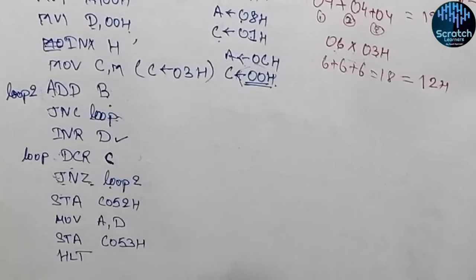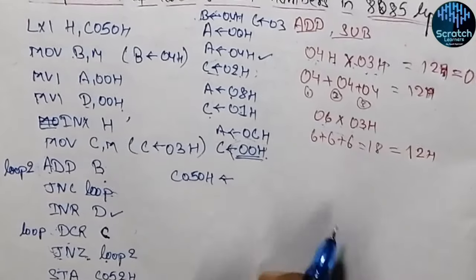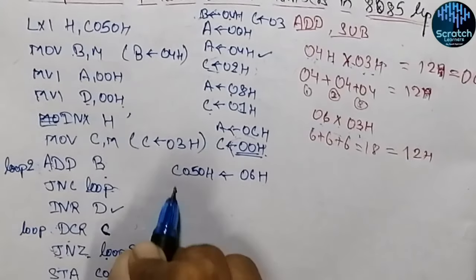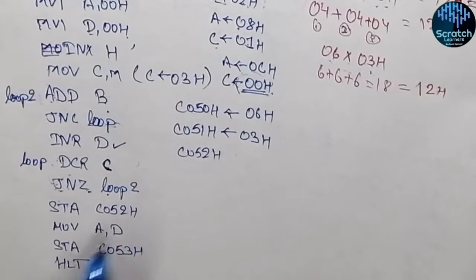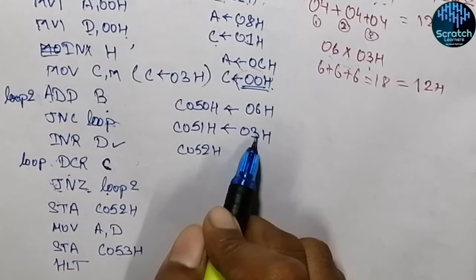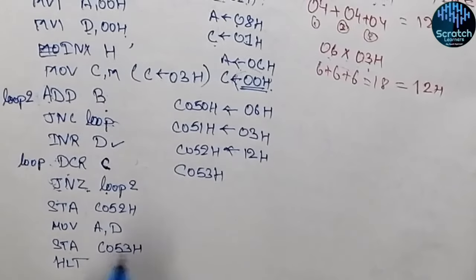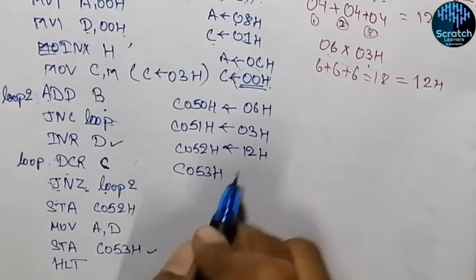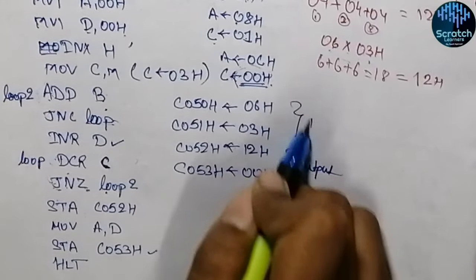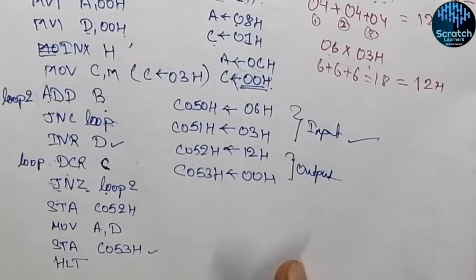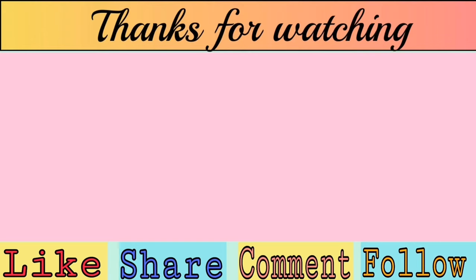And then halt. Now if you see the content of memory: in C050 hex we will be having the first input — let's say 06 hex. Then in C051 hex we will be having the second operand, that is 03 hex. Then in C052 hex, we are storing the result part — so 6 into 3 equals 12 hex in hexadecimal, so it will be having 12 hex. And in C053 hex, we are storing the carry part — here there is no carry generated, so it will be storing 00 hex. So this is the output and this is the input. I hope this process is clear for you. In the next video, we will see the division of two 8-bit numbers in 8085. See you in the next video. Thank you.